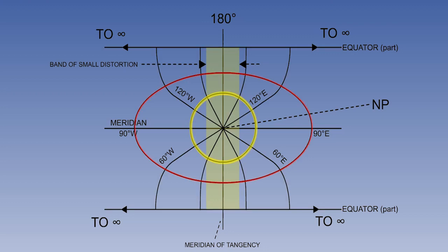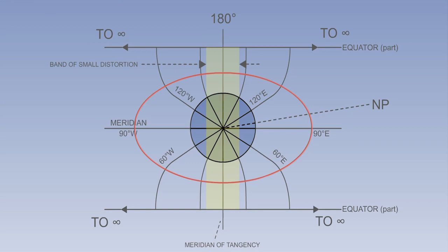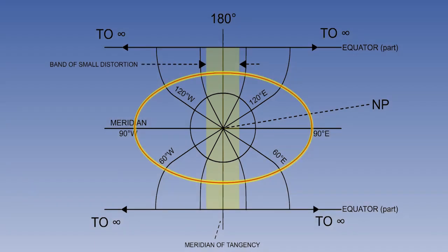Near the pole parallels are close to circular, so the meridians will emerge radially from the pole in a very similar way to the polar stereographic. However, at lower latitudes the parallels become more elliptical. The meridians must therefore curve so that they cross this parallel at right angles too.